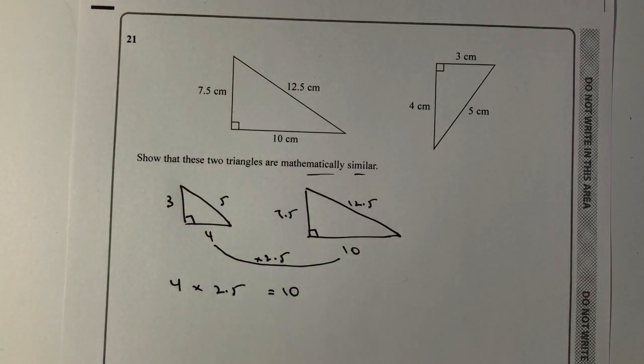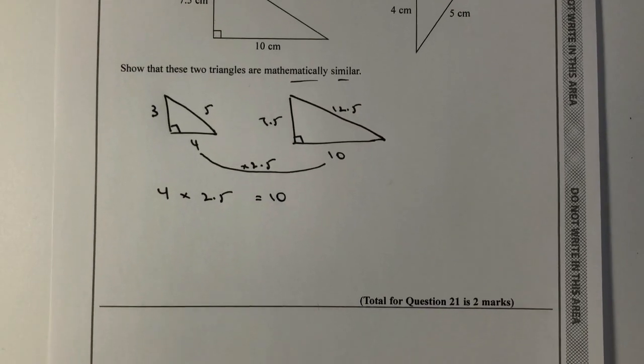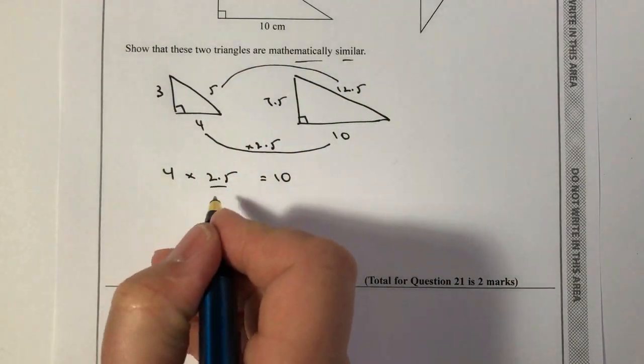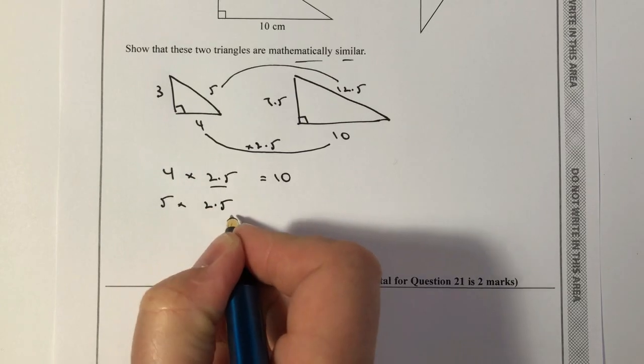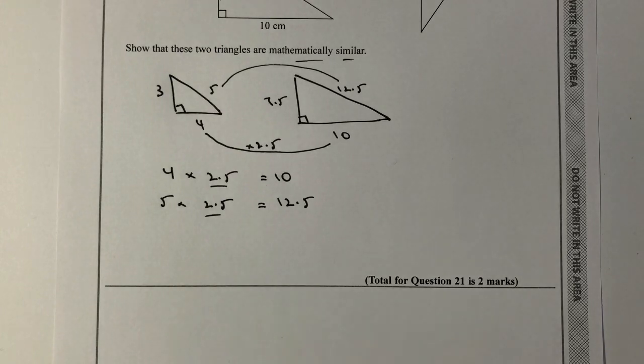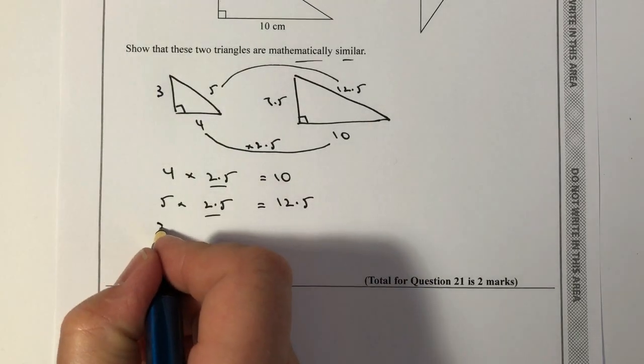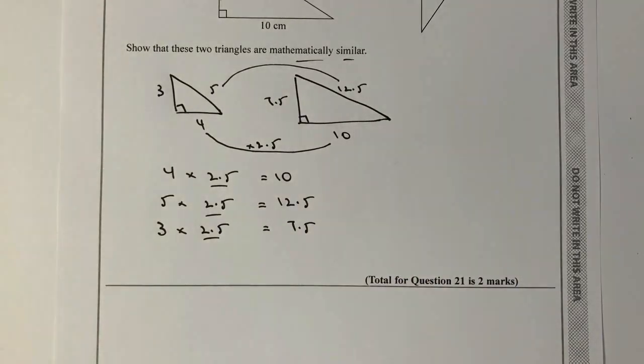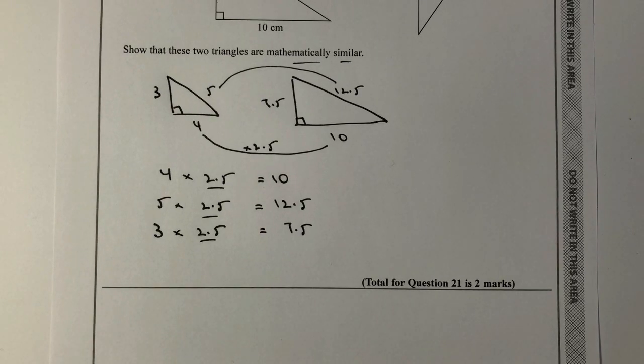Let's have a look at the other two sides as well to make sure the same holds true. If I look at 5 and 12.5, I've got 5 times 2.5, that equals 12.5. This is looking good. So let's look at the last one. I've got 3 times 2.5 and that equals 7.5. Therefore, because they all multiply by the same scale factor, then we can say that they are mathematically similar.